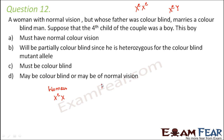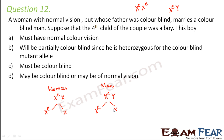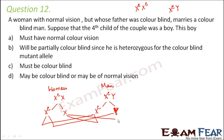What about the man? The man is color blind, so his genotype would be X^C Y. Now let us see the possibility of the gametes that would be produced from this man and woman.